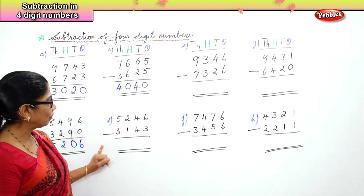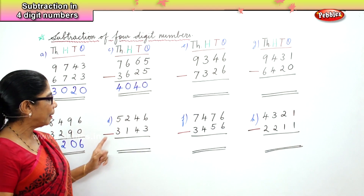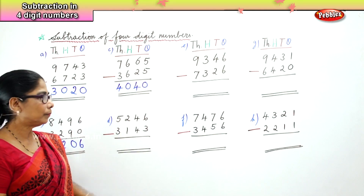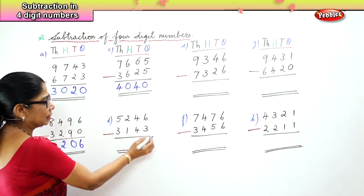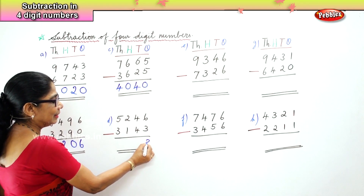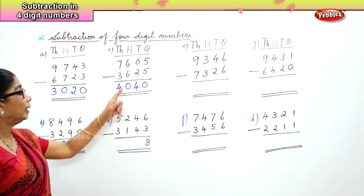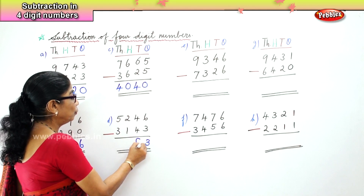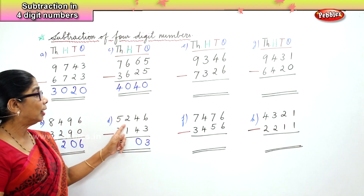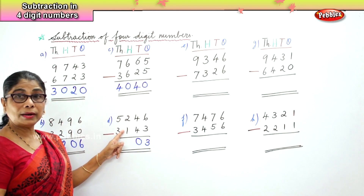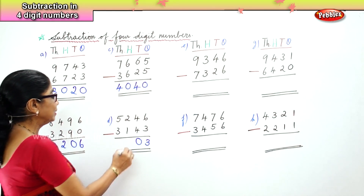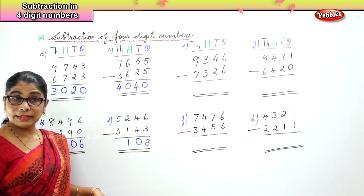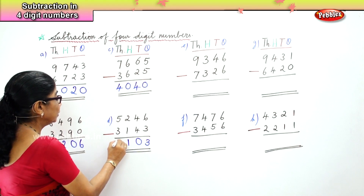Let's take another sum: 5,246 minus 3,143. In the ones place, 6 ones minus 3 ones — 6 minus 3 is 3. In the tens place, 4 tens minus 4 tens — 4 take away 4 is 0. In the hundreds place, 2 hundreds minus 1 hundred — 2 take away 1 is 1. In the thousands place, 5,000 minus 3,000 — 5 minus 3 is 2.